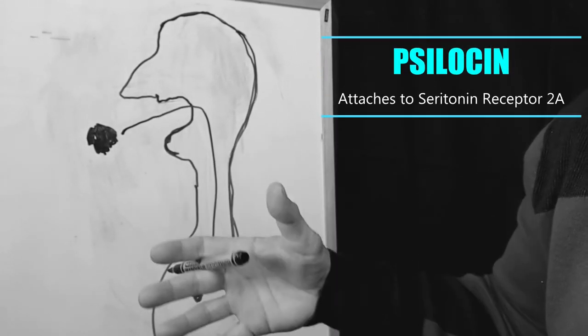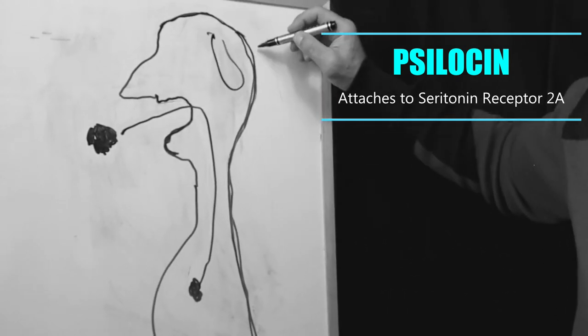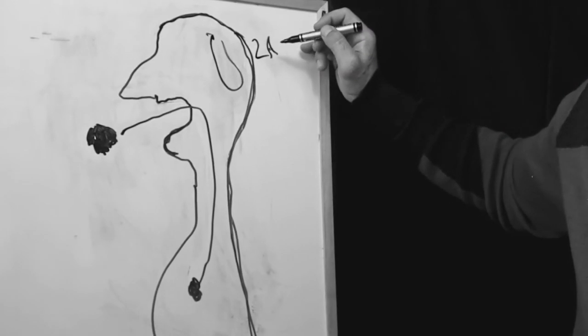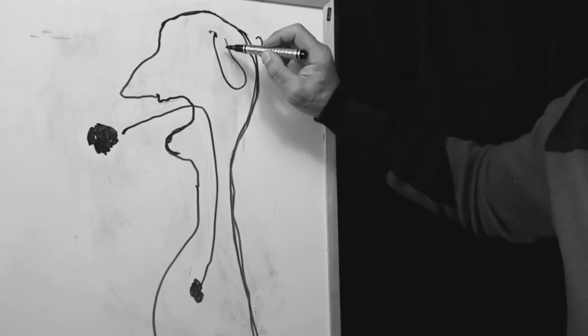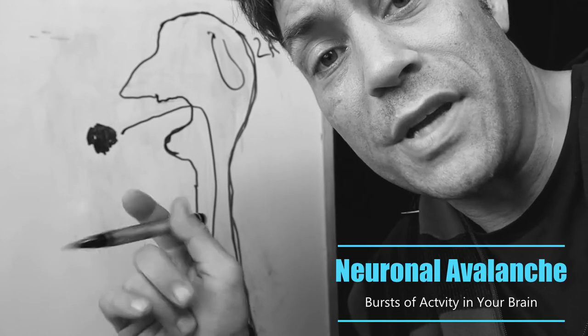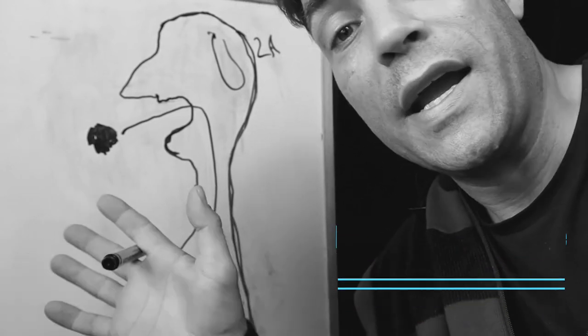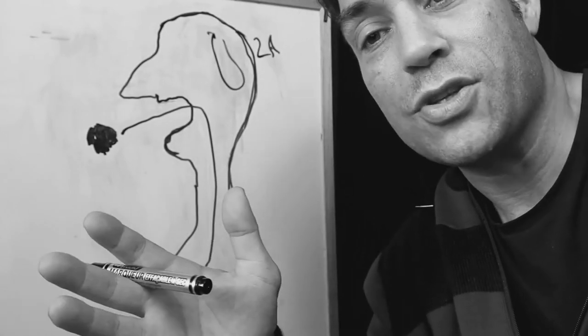Psilocin binds to serotonin receptors here in your brain called 5-HT2A, I believe it's called. They think that's what causes a little thing happening in your brain called neural avalanching. Now, neural avalanching is basically a bunch of chemical reactions happening in your brain that are all working together at once.